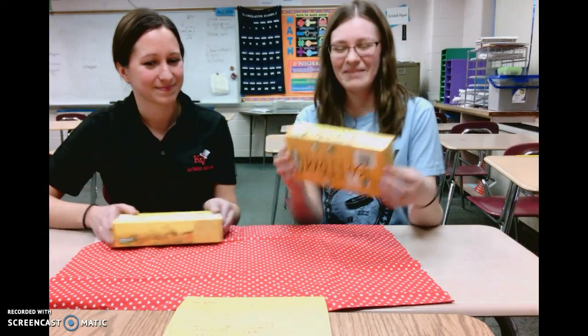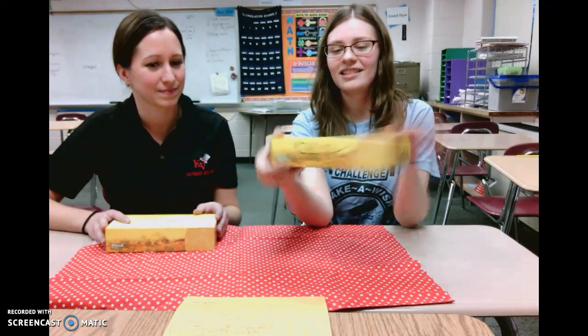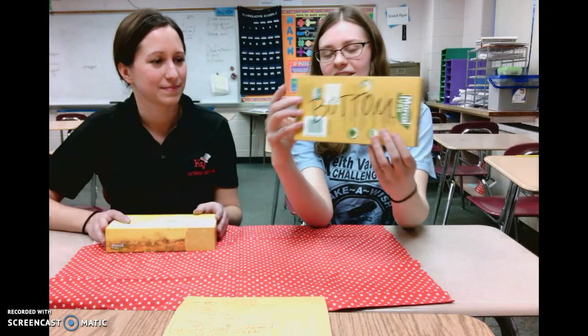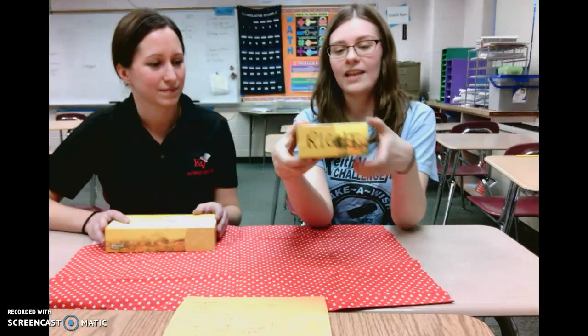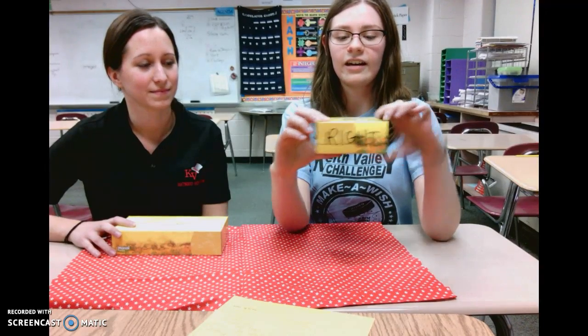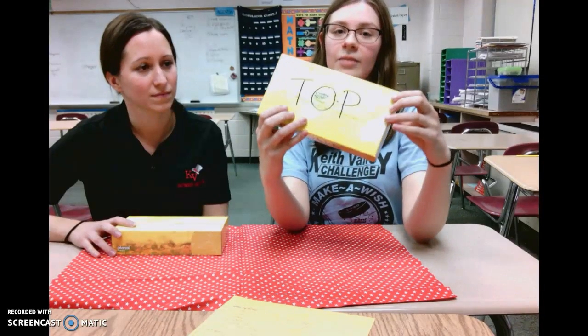That's right. Let's name them. There's the front face, the back face, the top face, the bottom face, the left face, and the right face. And they're all rectangles. So all that we have to do is find the area of each of our six faces and add them all together. Then we have our surface area.